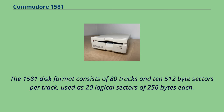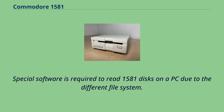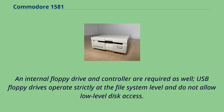The 1581 disk format consists of 80 tracks and 10 512-byte sectors per track, used as 20 logical sectors of 256 bytes each. Special software is required to read 1581 disks on a PC due to the different file system. An internal floppy drive and controller are required as well, as USB floppy drives operate strictly at the file system level and do not allow low-level disk access.